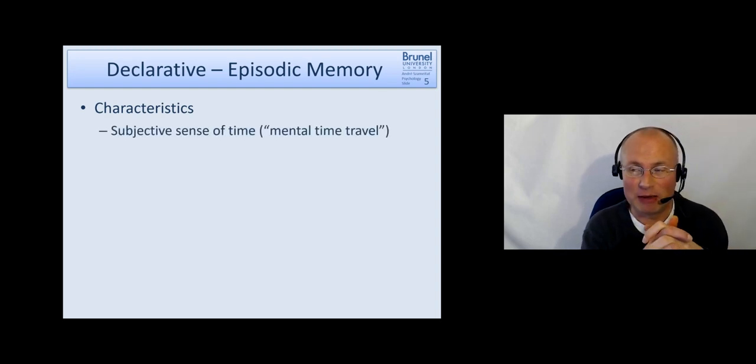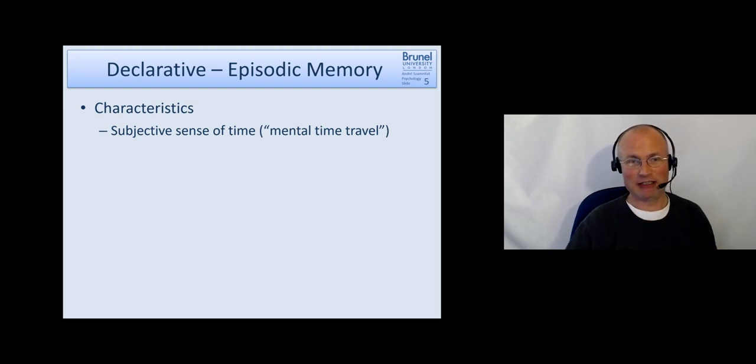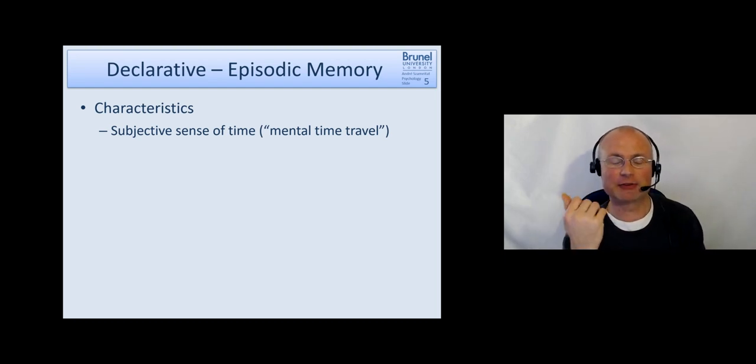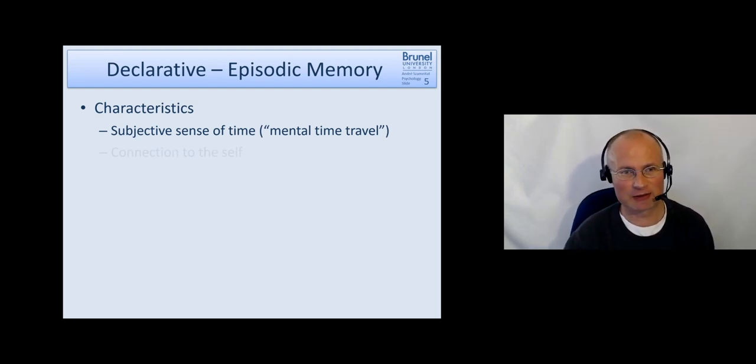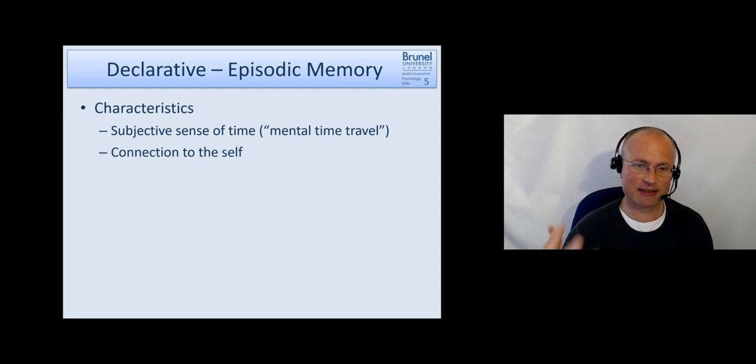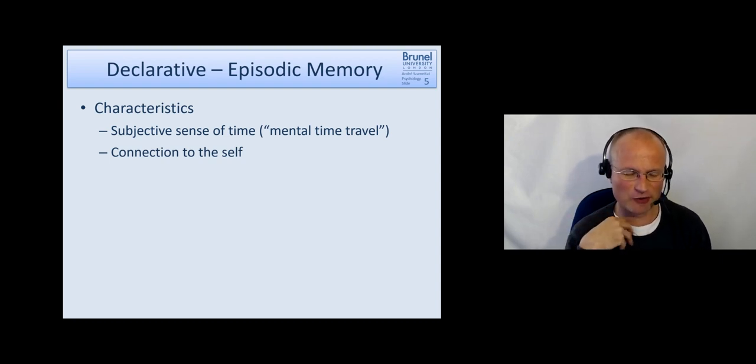The episodic memory has the following characteristics. As I already mentioned, there's this subjective sense of time, the mental time travel. Like okay, this was roughly two years ago. We can do that quite well. It has a connection to the self, so we really have the impression that's our life, our memory, a part of ourself, which for regular facts like London is in England usually is not the case.